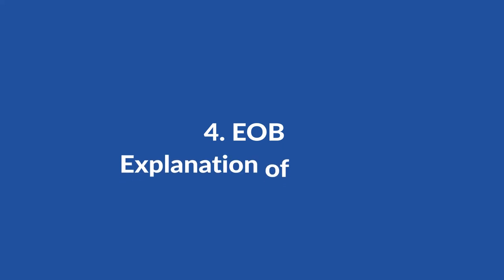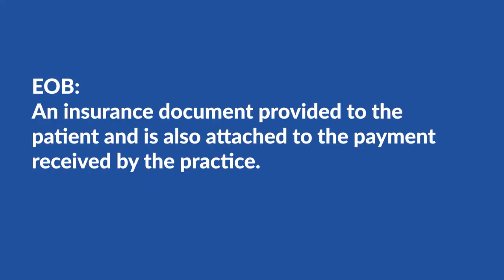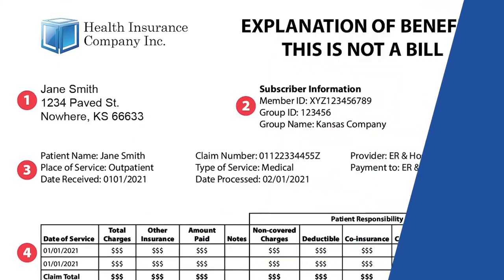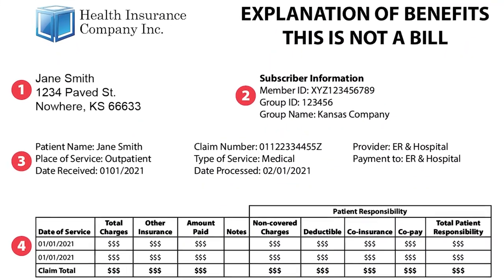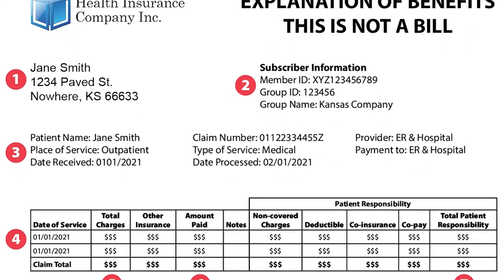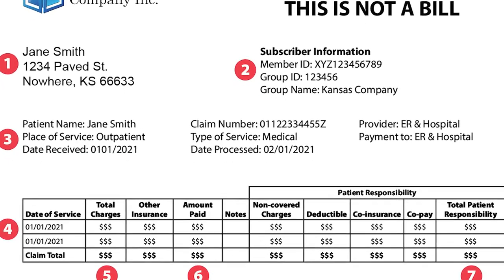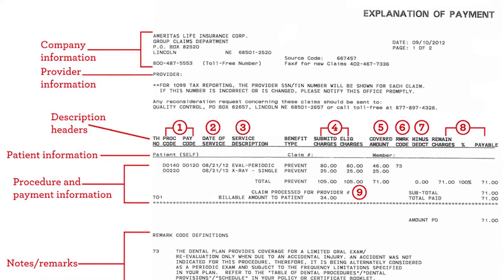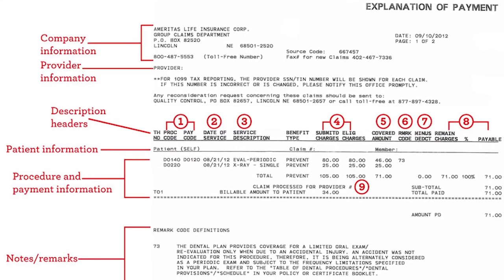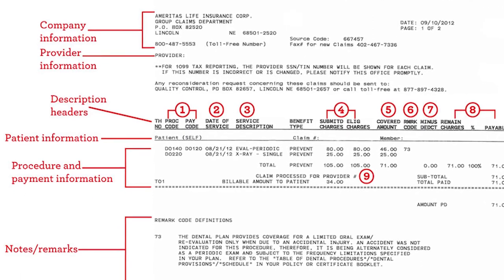Number four: EOB, Explanation of Benefits. This is an insurance document provided to the patient and also attached to the payment received by the practice. The EOB explains the benefits paid in detail by procedure — it's a document telling the patient how their insurance benefits have applied to the procedure, breaking down their cost.